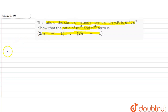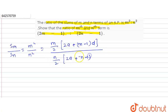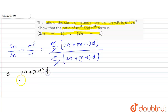Given that the ratio of sum of m terms and sum of n terms is m² upon n², we can write this as: [m/2 · (2a + (m-1)d)] upon [n/2 · (2a + (n-1)d)]. The 2s cancel out, giving us (2a + (m-1)d) upon (2a + (n-1)d) equals m upon n.